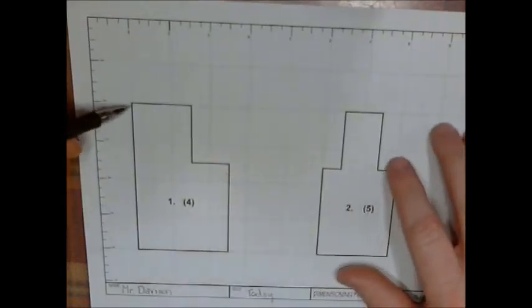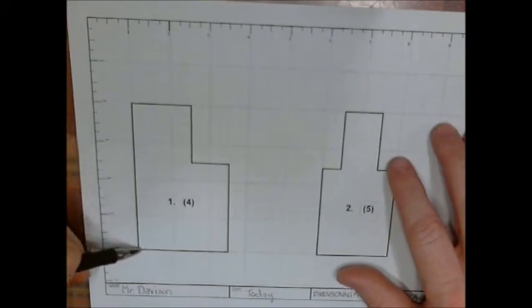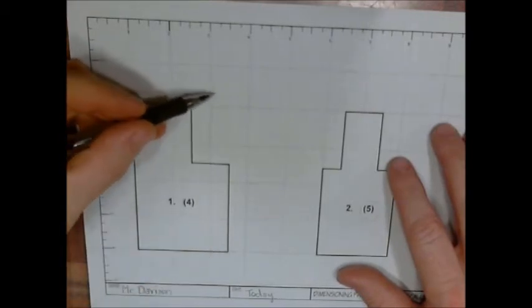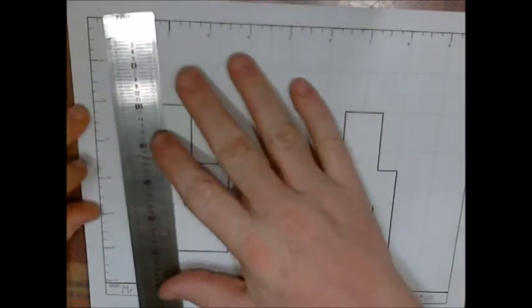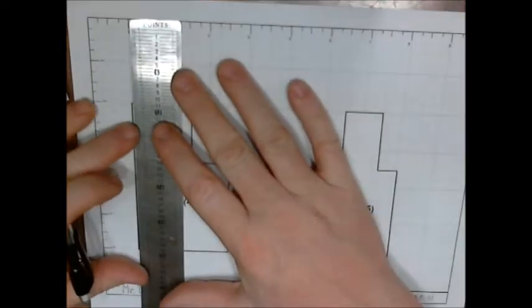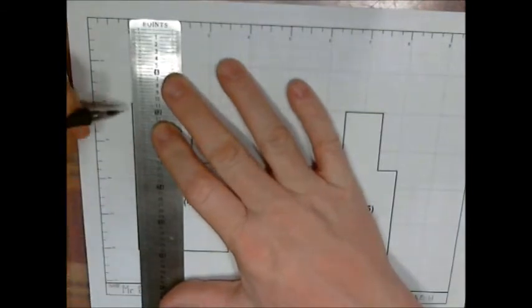I am picking this edge as my datum and this bottom edge as my datum, and I am going to start across the top. I am going to put my straight edge down. I am going to align it with this edge - don't go right to the edge of the object but just a little above.